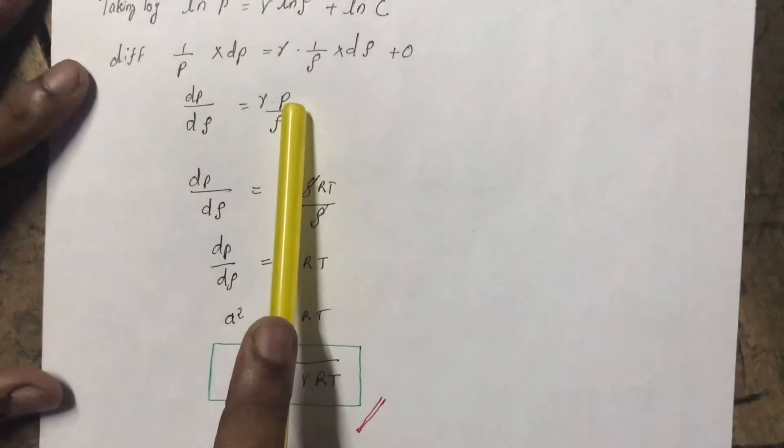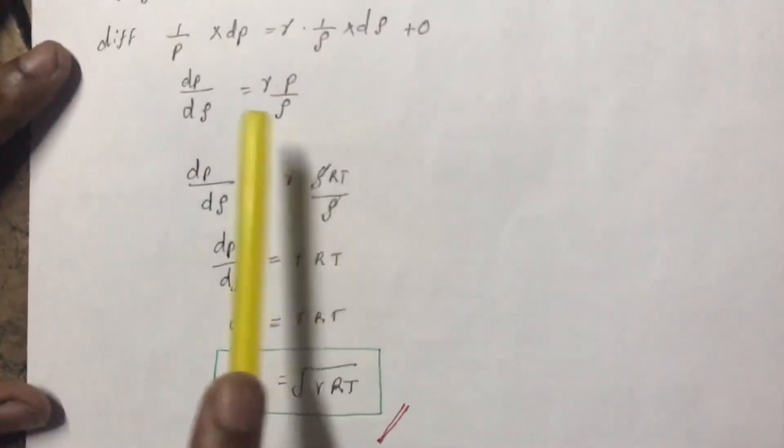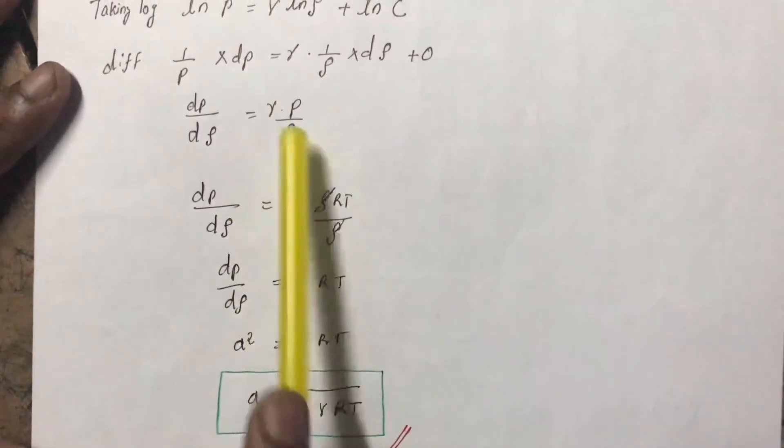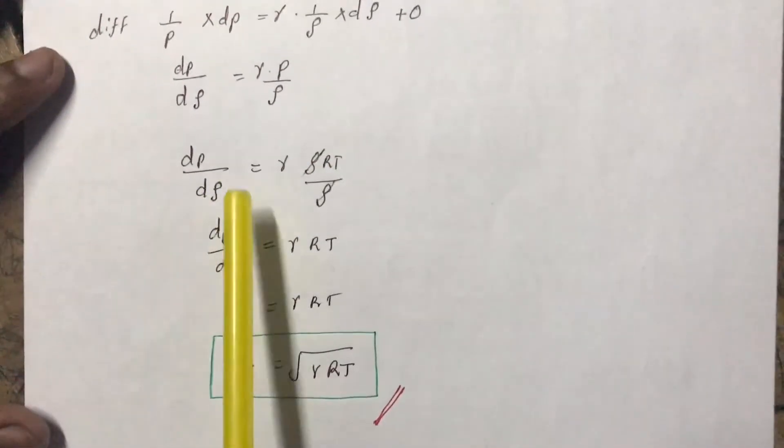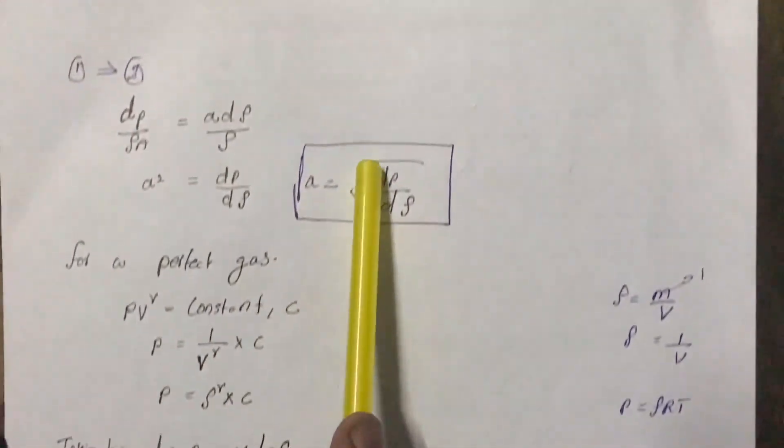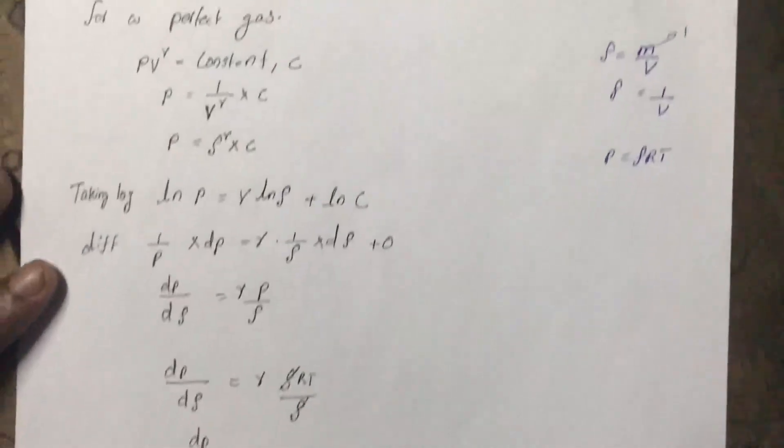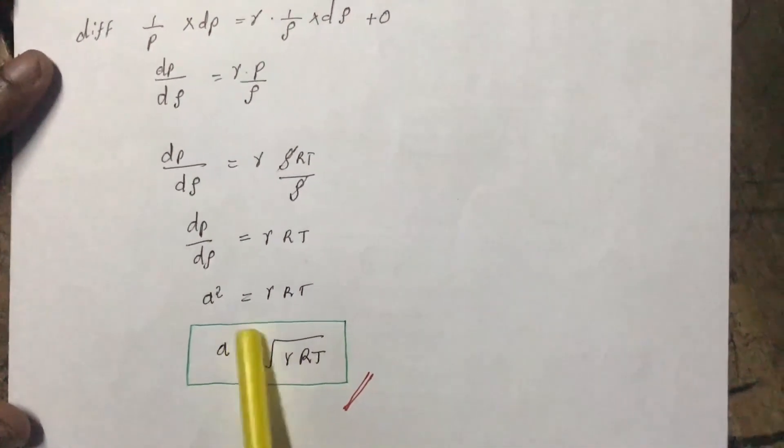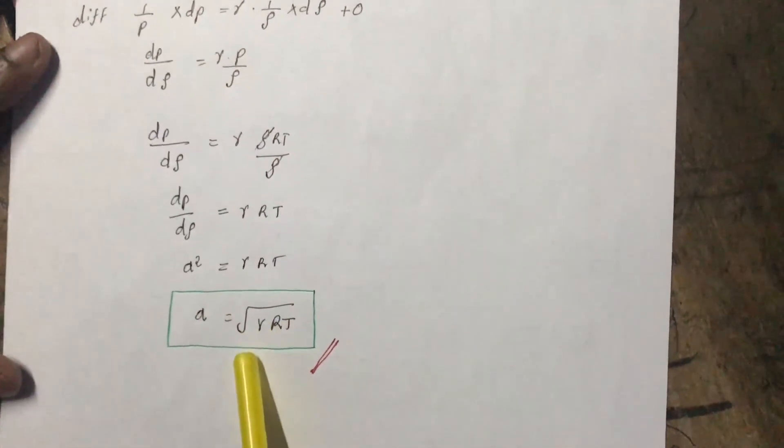We know p is equal to rho RT, and from that we can express it as rho RT. Therefore, we can cancel out the rho, and dp by d rho is equal to gamma RT. We have already found that a is equal to root of dp by d rho. So substituting this in this equation, a squared is equal to gamma RT, or a is equal to root of gamma RT. This is the equation we have to find out. Thank you.